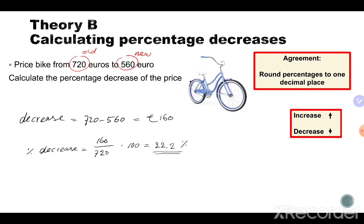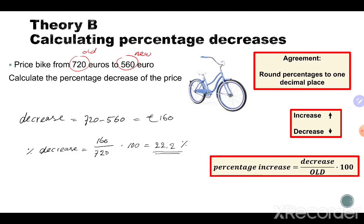Looking at the formula from Theory A, it is almost exactly the same as Theory B. Because here we're going to talk about the percentage decrease instead of increase. So the formula is: percentage decrease equals the decrease divided by the old amount, then multiplied by 100. Those are the formulas, and it's very important to know when calculating percentage increases or decreases from a certain amount.